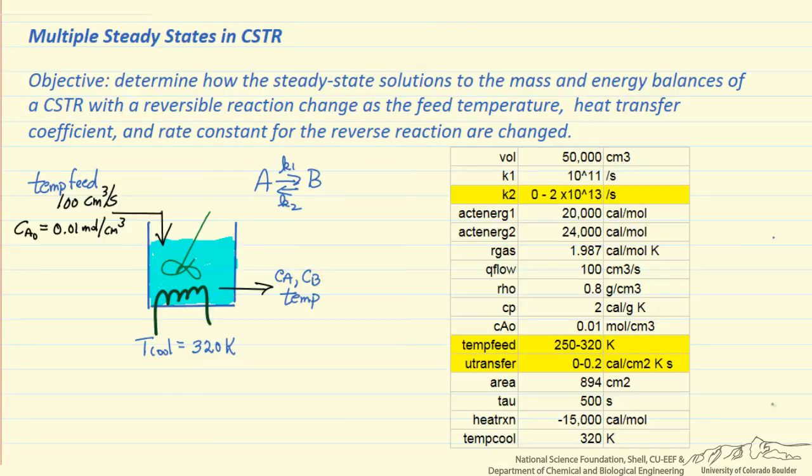Continuous stirred tank reactors can have multiple steady state solutions to the mass and energy balances that describe the reactions in these stirred tank reactors.